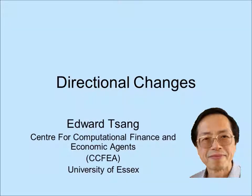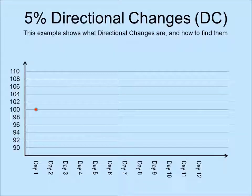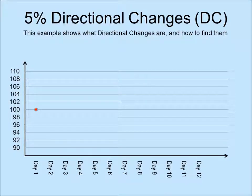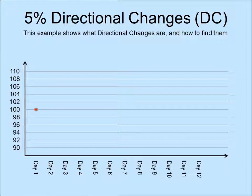In this video, I'm going to explain what directional changes are and how to find them. This is a new way to summarize key events in the market. The state of a market is classified into upward and downward trends. The market is then summarized by events which indicate directional changes. The details of a summary depend on what we consider to be a significant price change.